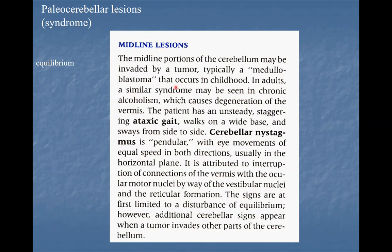Concerning syndromes associated with cerebellar regions: the midline portion may be affected by a tumor — typically medulloblastoma occurring in childhood. In adults, a similar syndrome may be seen in chronic alcoholism, causing degeneration of neurons of the vermis. The patient has an unsteady, staggering ataxic gait, walks on a wide base, sways from side to side, and exhibits cerebellar nystagmus — a pendular movement of the eyes. This is typical for midline cerebellar pathology and is sometimes called paleocerebellar syndrome.